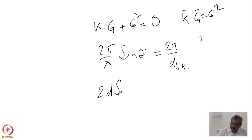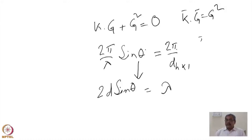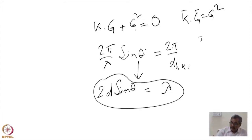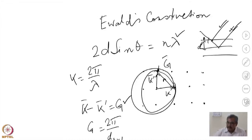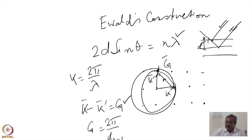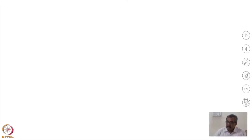This ultimately gives 2d sinθ = λ for the zeroth order. So starting from k − k′ = G we can get back to Bragg's law 2d sinθ = λ, showing these two formulations are equivalent.